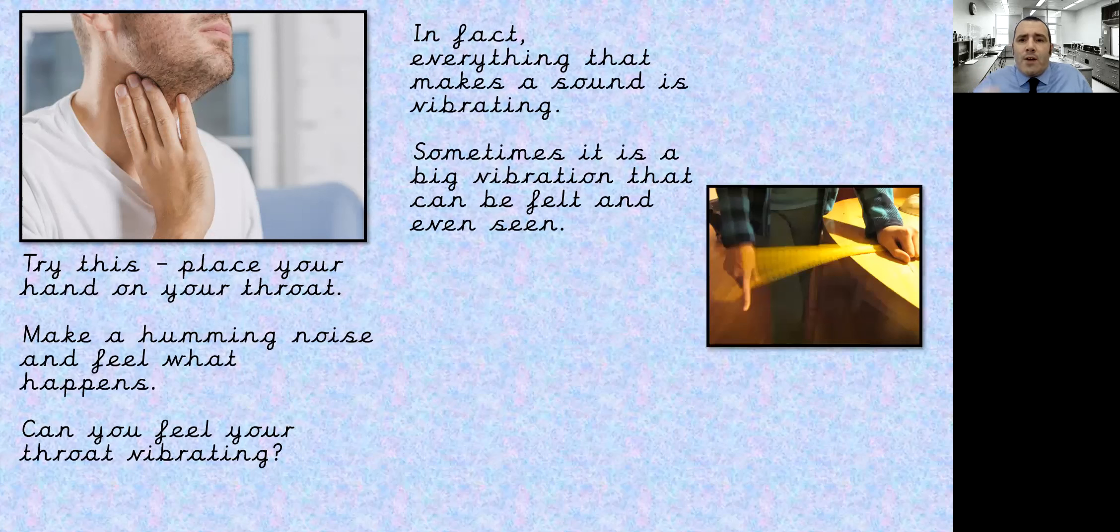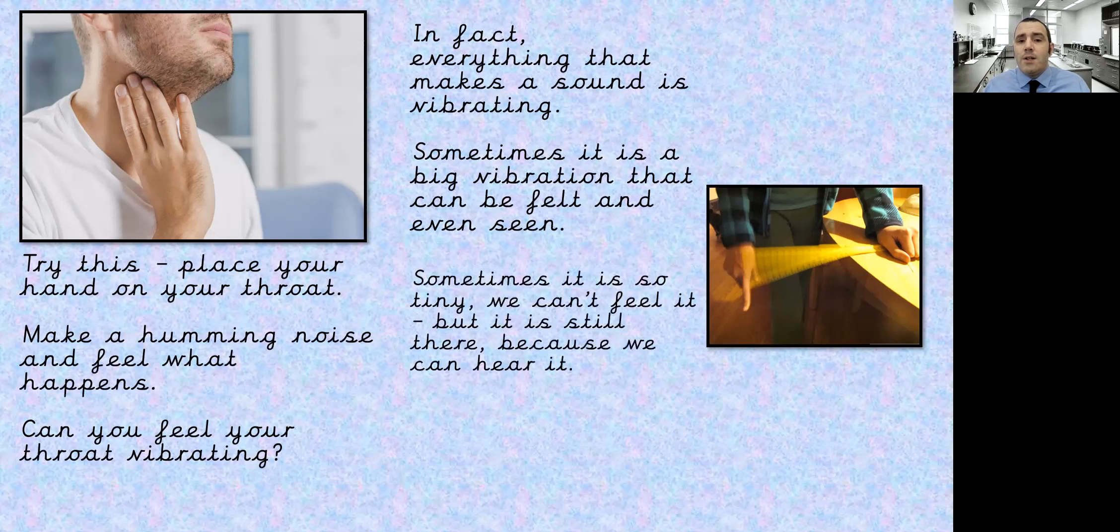You can also do it with a ruler. Now this one is really annoying, so don't do it for too long. But again, you can change that sound by changing the length of the ruler hanging over the table. You can also see the vibration with this one. It's probably easier to see it with this. Be gentle though, because we don't want to snap our rulers. Sometimes that sound is so tiny we can't feel it, but it's still there because we can hear it.